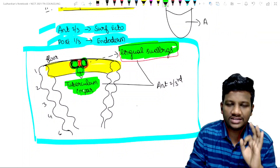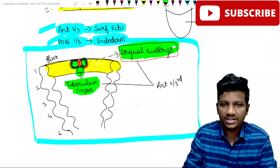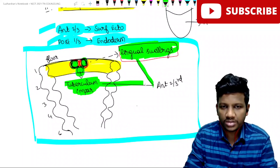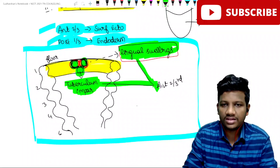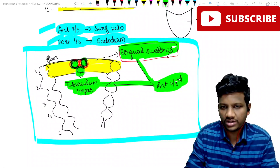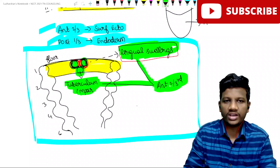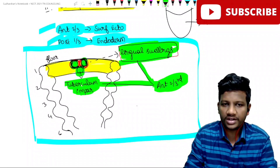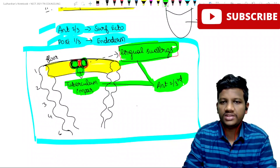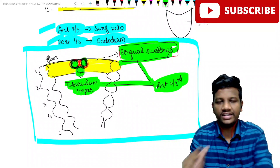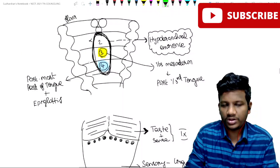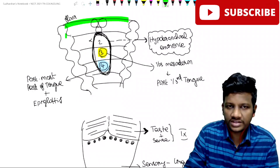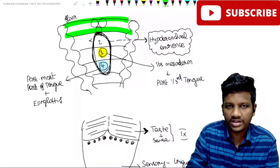The lingual swellings and the tuberculum impar together form the anterior two-thirds of the tongue. Both the lingual swellings and tuberculum impar arise from the floor of the first pharyngeal arch.